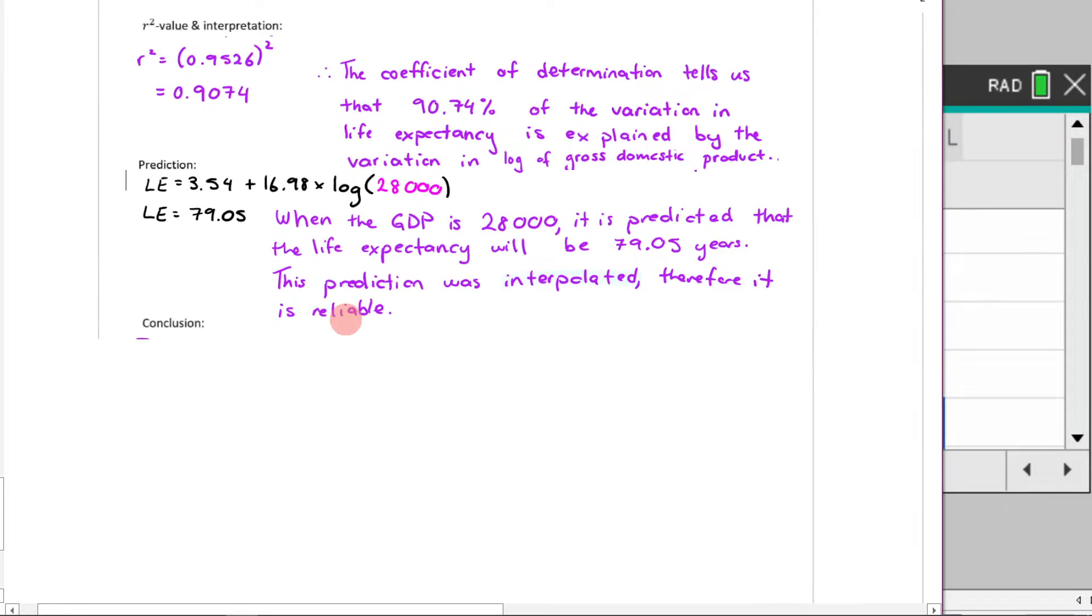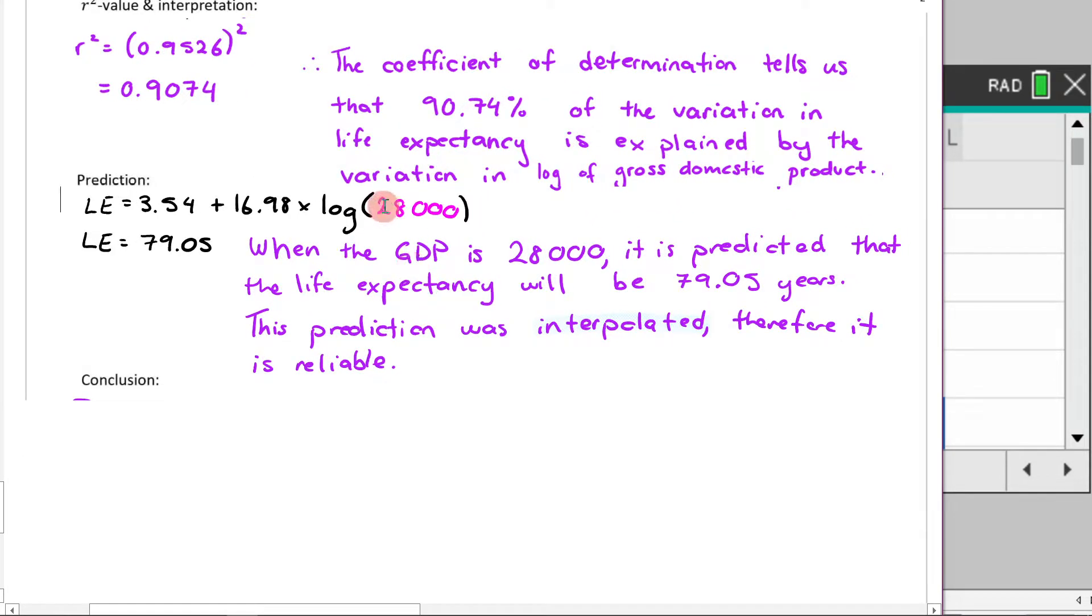So we come over here. This is the prediction. Now we're showing the working that we've done. We're subbing in that value into our least square regression line. That is the working. We then write that down. We then say when the GDP is this, it is predicted that the life expectancy will be that correct amount of units, 79.05 years. Then we say the prediction was interpolated, therefore it is reliable. So before it said, talk about the reliability of it. We know that this is an interpolation.